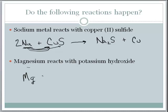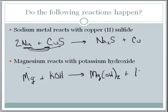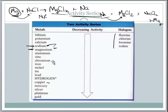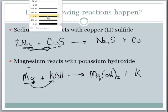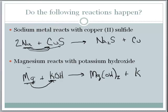Next: magnesium reacting with potassium hydroxide. The products would be magnesium hydroxide and potassium — magnesium is replacing the potassium. Looking at the activity series, potassium is near the top. Since potassium is higher than magnesium on the activity series, this reaction would not happen because magnesium is not strong enough to replace potassium.